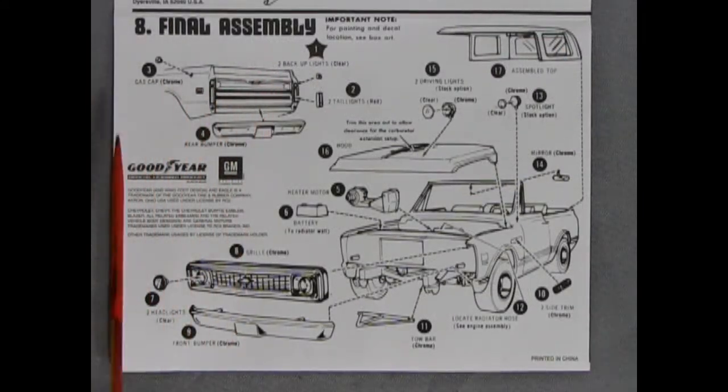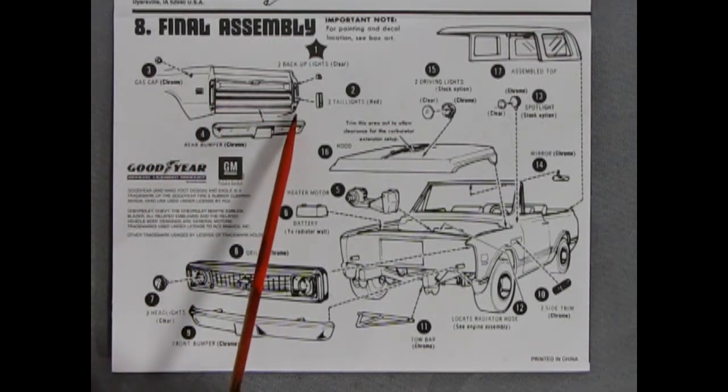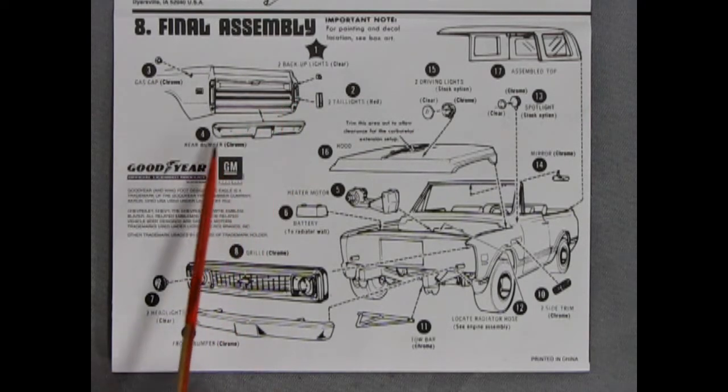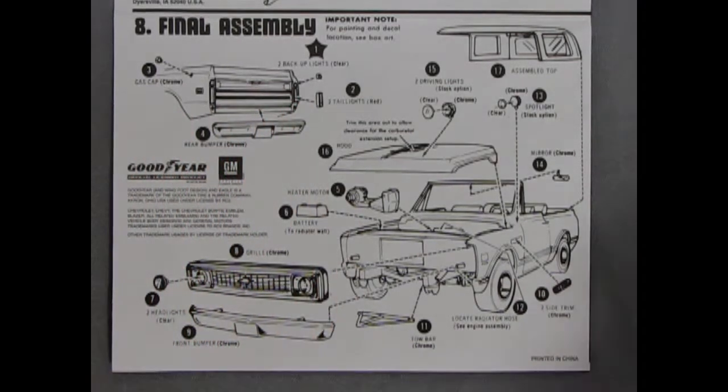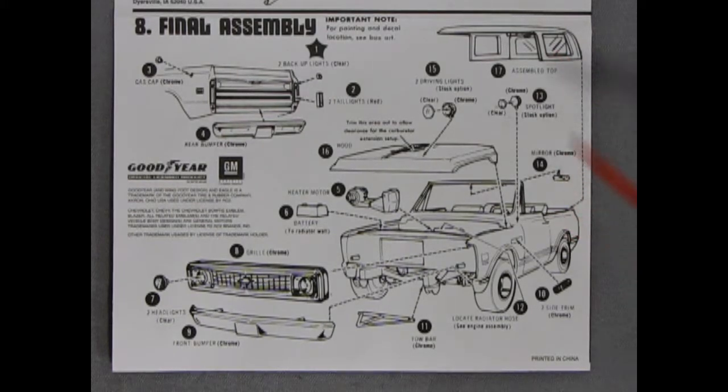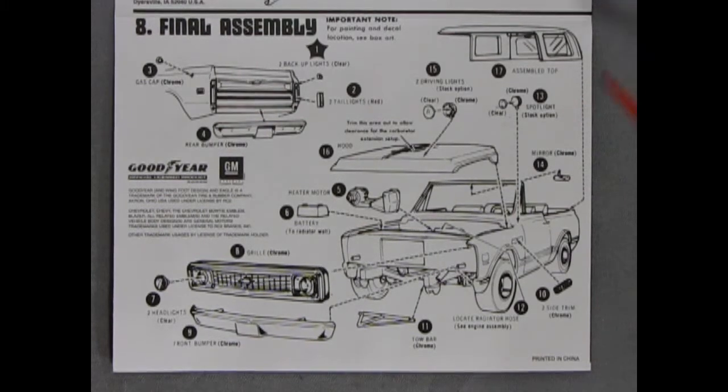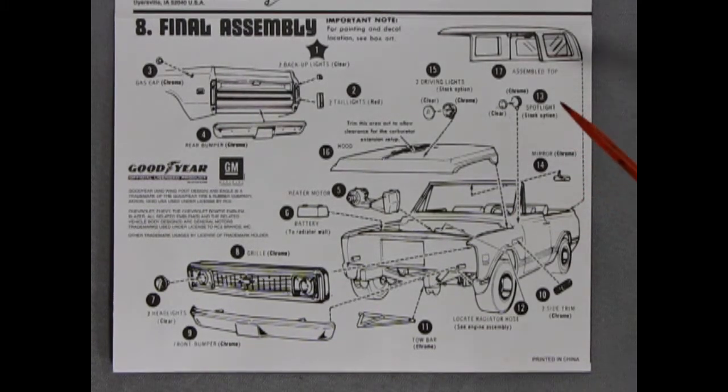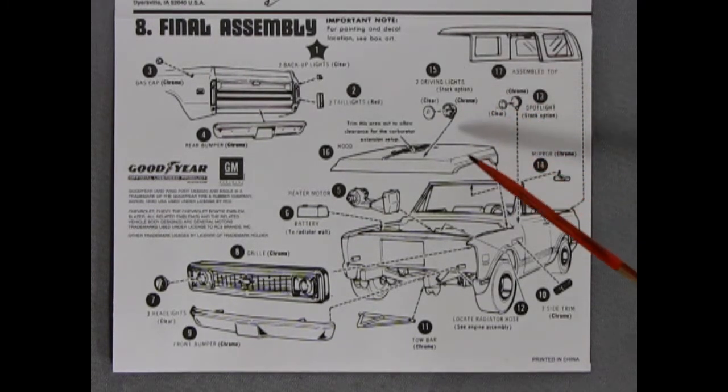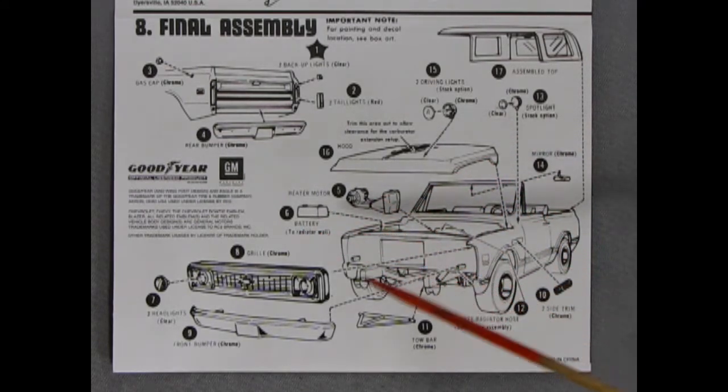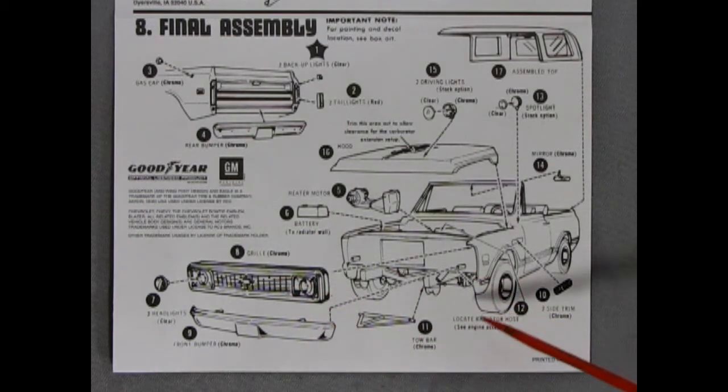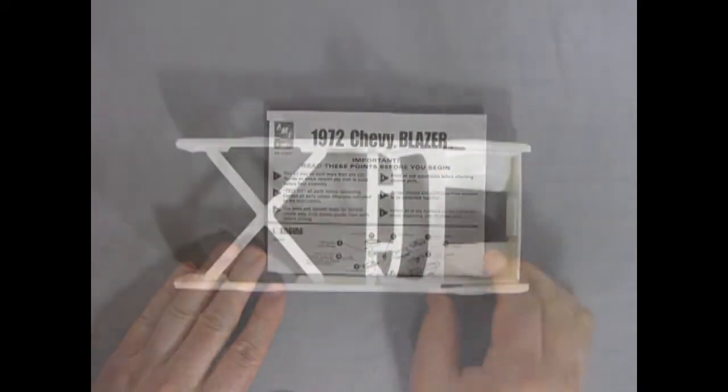And next we have our final assembly. So this is where we get our gas cap going on. Our tail lights. Our backup lights. Our rear bumper. And then you can pop the roof on here. You can either glue it on or leave it so you could have it removable. There's our rear view mirrors. Our spotlights. Driving lights. Our hood. A heater motor. Battery. The front grille and bumper. We've got a tow bar here as well. And then some side trim. And that completes our look at our 72 Chevy Blazer instruction sheets.